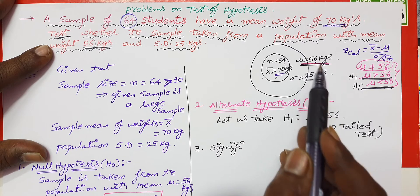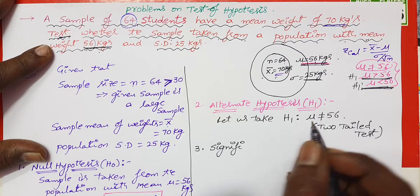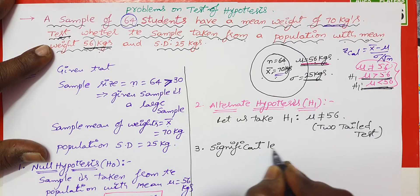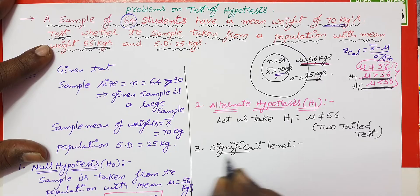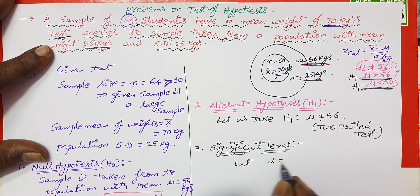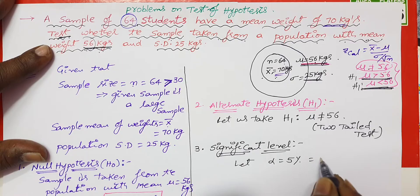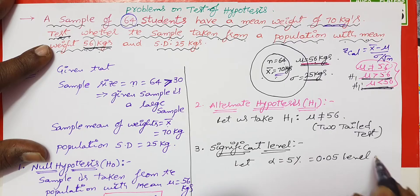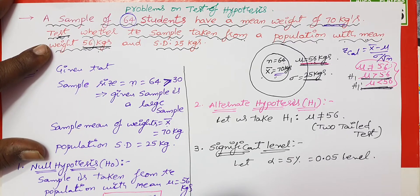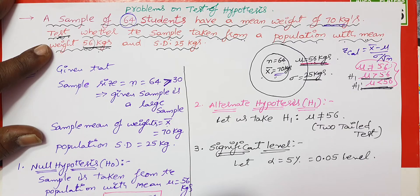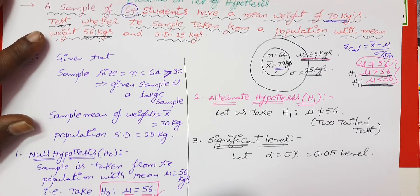We will test at the significant level. The significant level is 5%. Let alpha equal to 5%, which is 0.05 level.